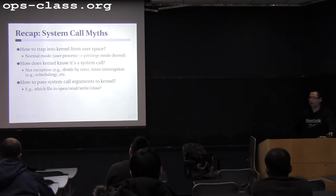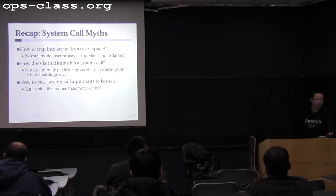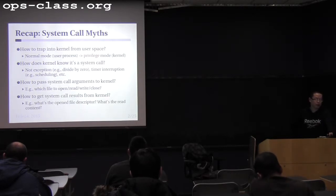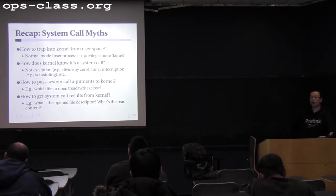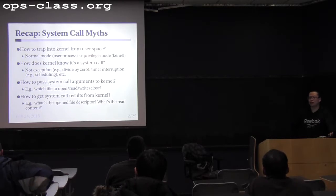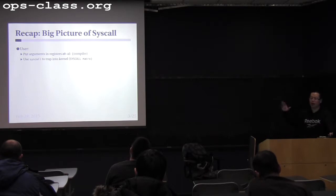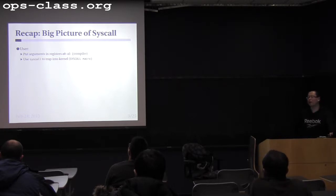Some interruptions are timer interruptions, others are syscalls. We basically have a number to differentiate that, and the kernel just checks that number to figure out the cause of the interruption. Also, how does a user pass the syscall arguments to kernel space? We already know that it's through the argument registers A0 to A3. And how does a user get the syscall results from the kernel? The kernel puts the results in V0 and A3 registers, so the user can get them.